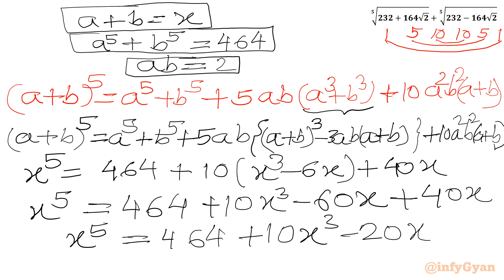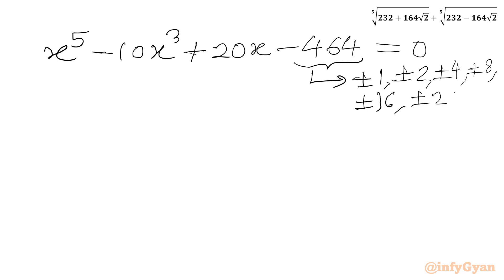Now I will find the eligible factors of 464. So I can write here plus minus 1, plus minus 2, plus minus 8, plus minus 16, plus minus 29, plus minus 58, and so on. And leading coefficient is 1, so I will write only plus minus 1 as factors.